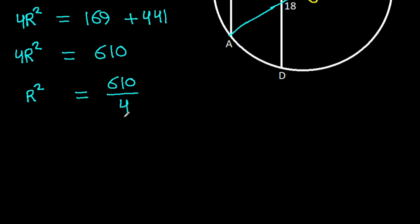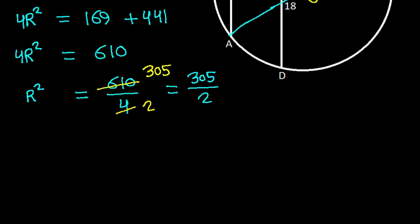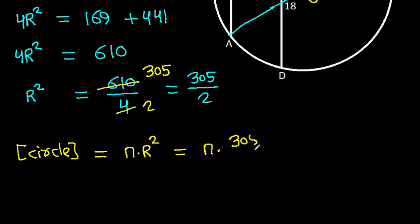Since 2 times 2 is 4 and 2 times 305 is 610, R squared is 305 over 2. The area of the circle is pi times radius squared, that will be pi times 305 over 2, and it is 305π over 2.